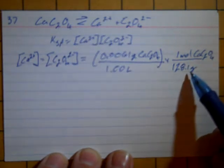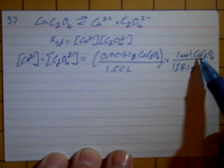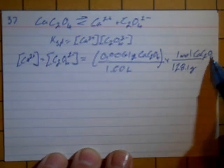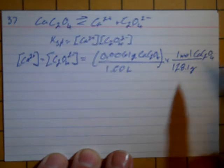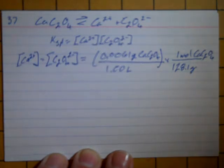So I got the 128.1 grams by looking at the formula and using my periodic table to find what is the mass of 1 calcium, 2 carbons, and 4 oxygens. That turns into 128.1 grams, the molar mass of calcium oxalate.